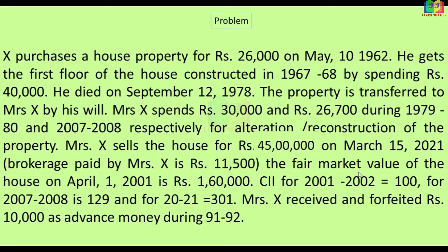The fair market value of the house on April 1, 2001 is Rs. 1,60,000. CII for 2001-02 is 100, for 2007-08 is 129, and for 2020-21 is 301. Mrs. X received and forfeited Rs. 10,000 as advance money during 1991-92.